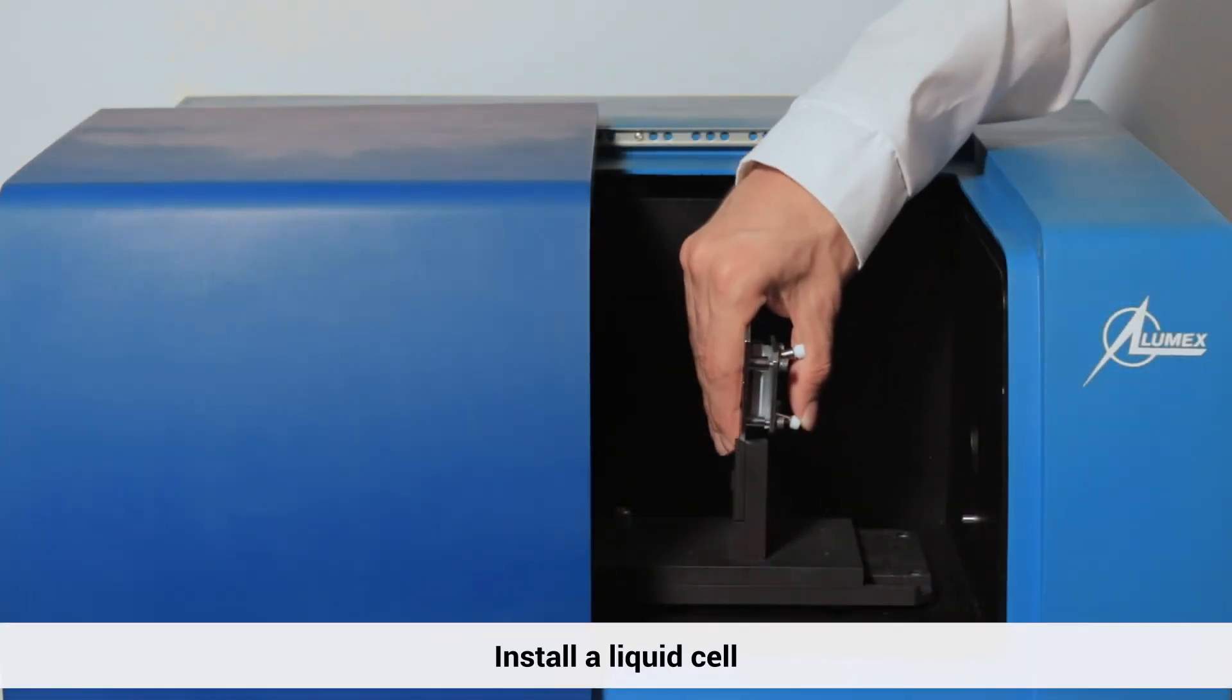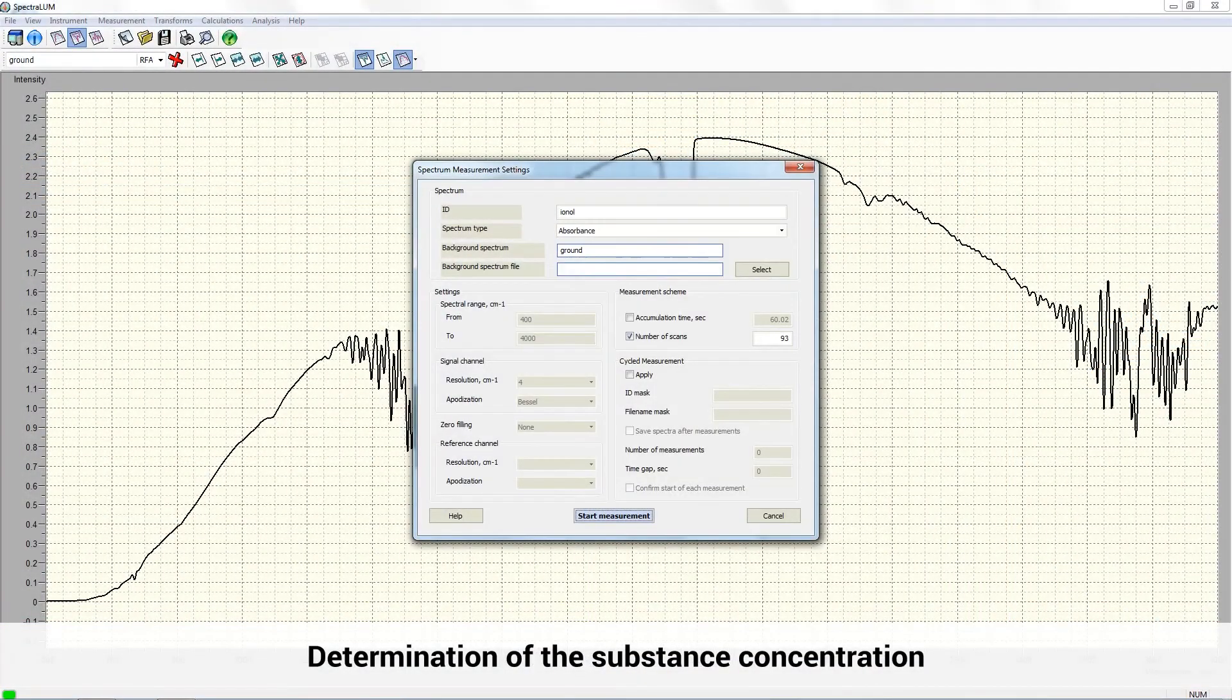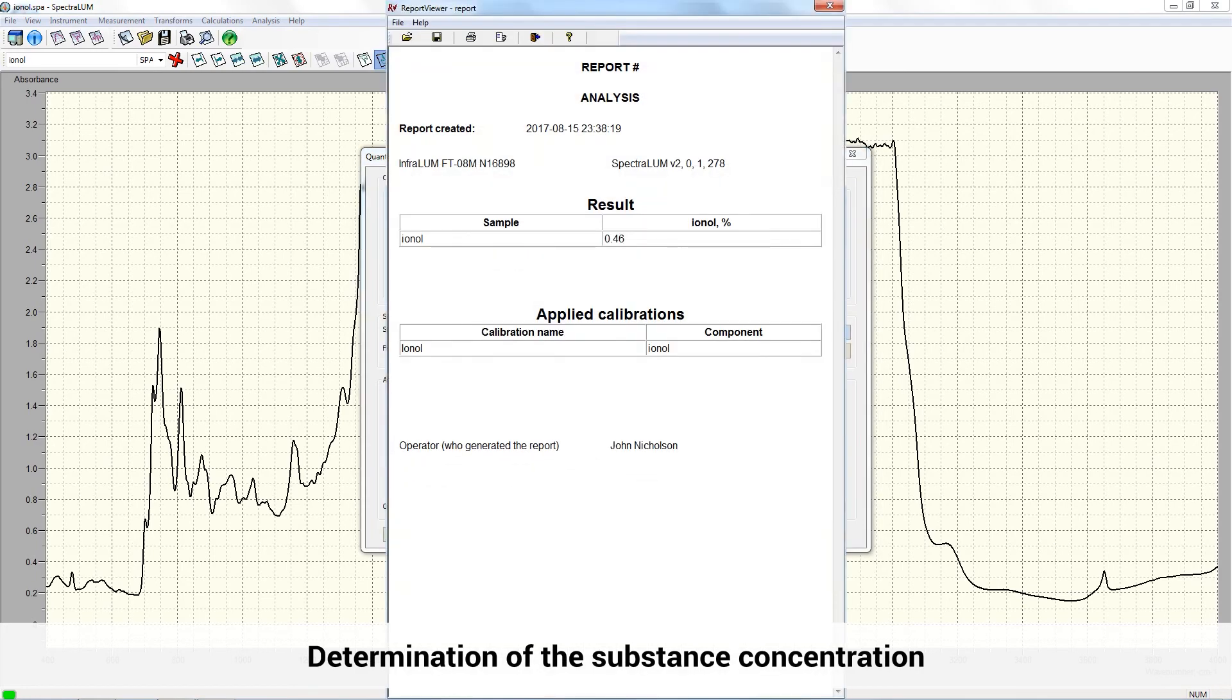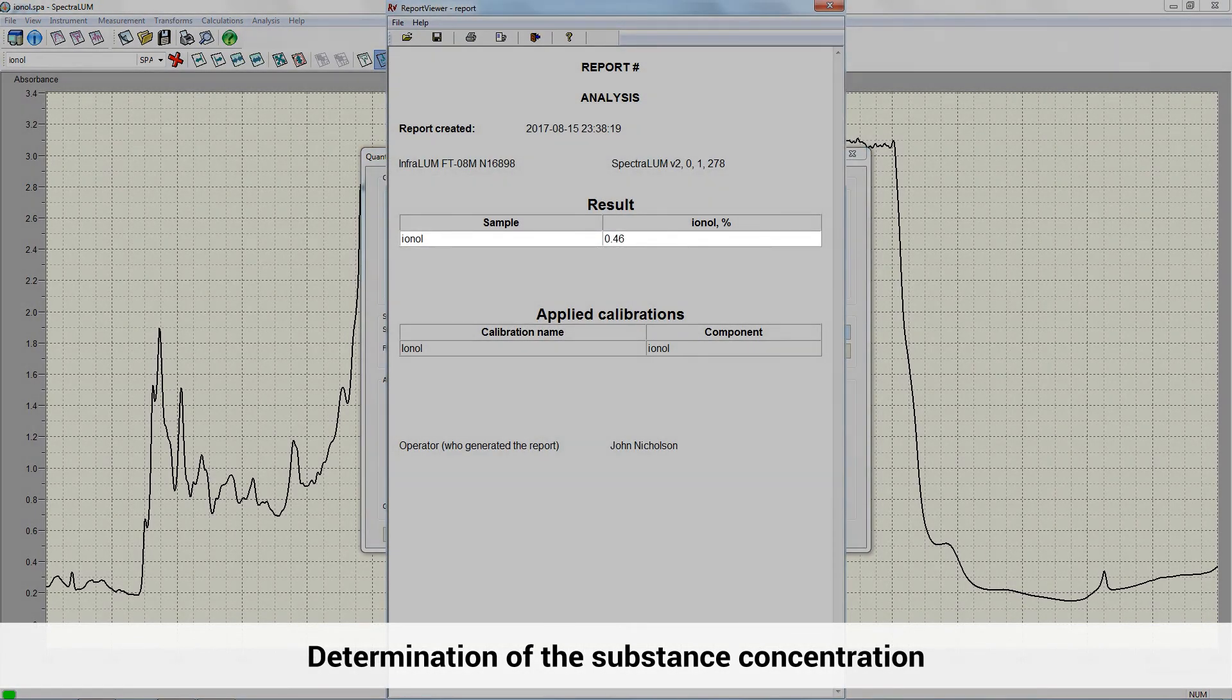Let me show you one last example. We will conduct a quantitative analysis of substance. We are installing a liquid cell containing the oil sample and starting the measurement. Now, according to a pre-established calibration curve, the substance concentration in the given sample is easily determined.